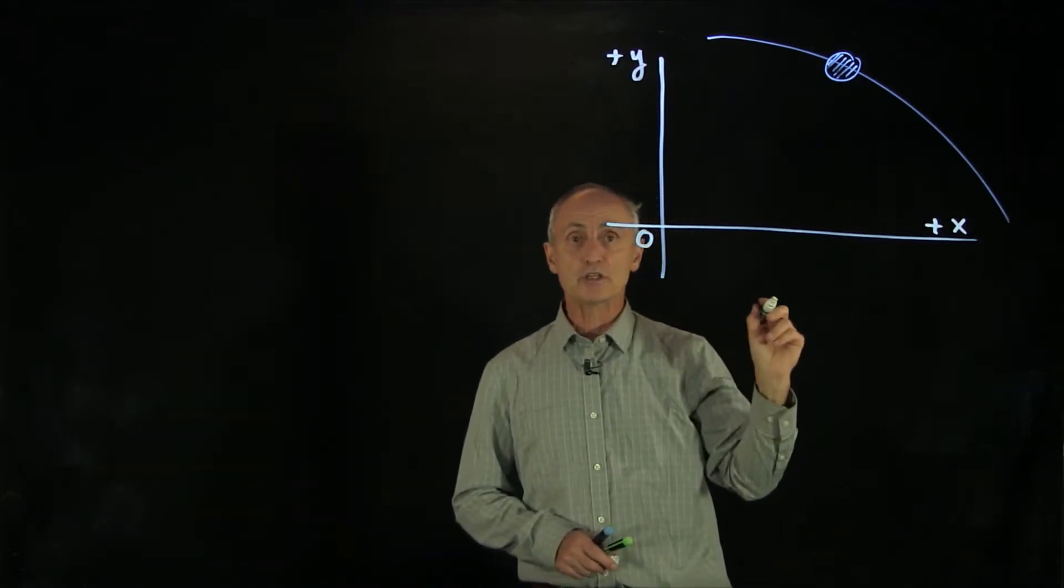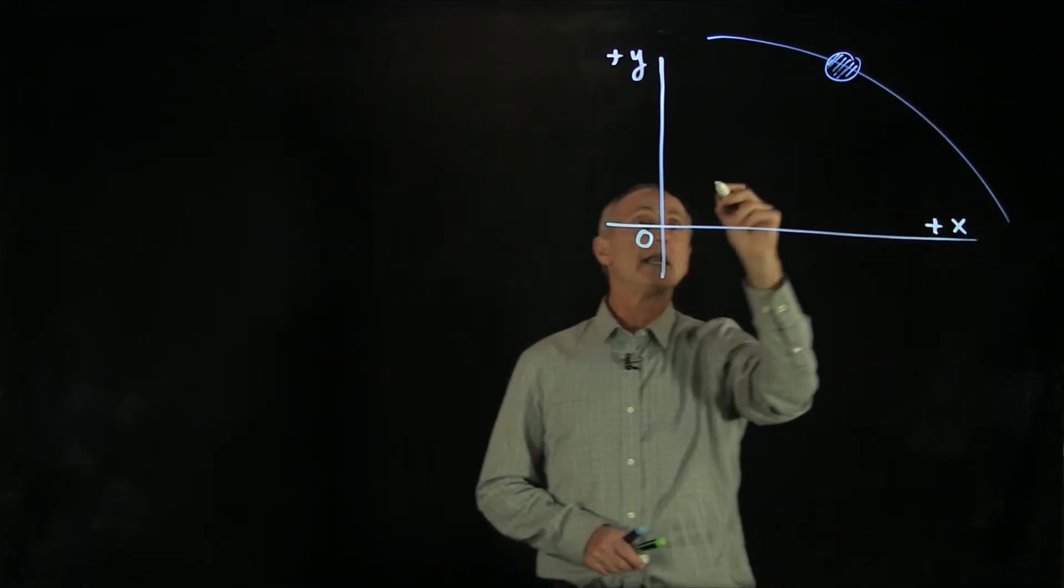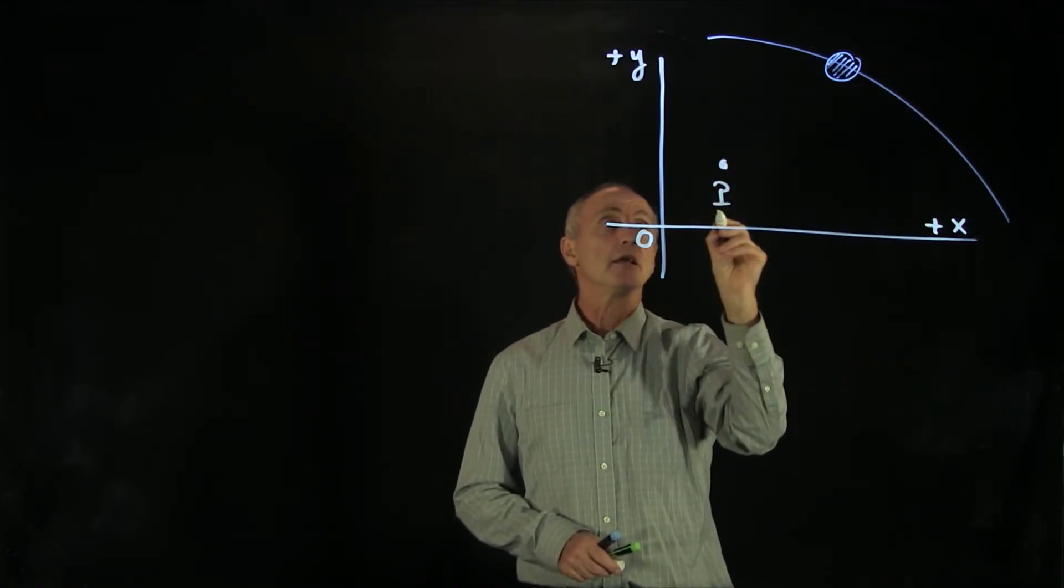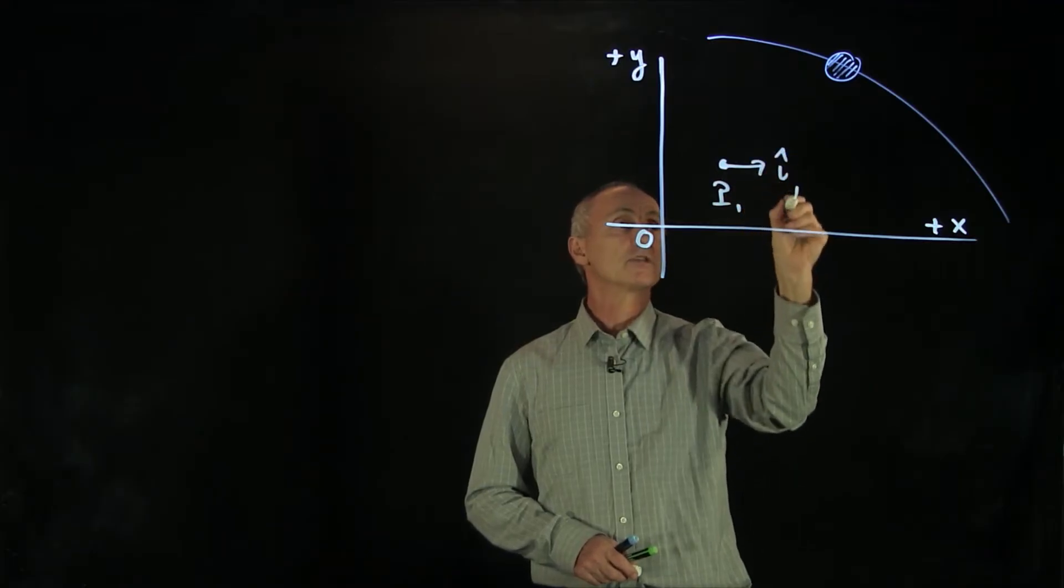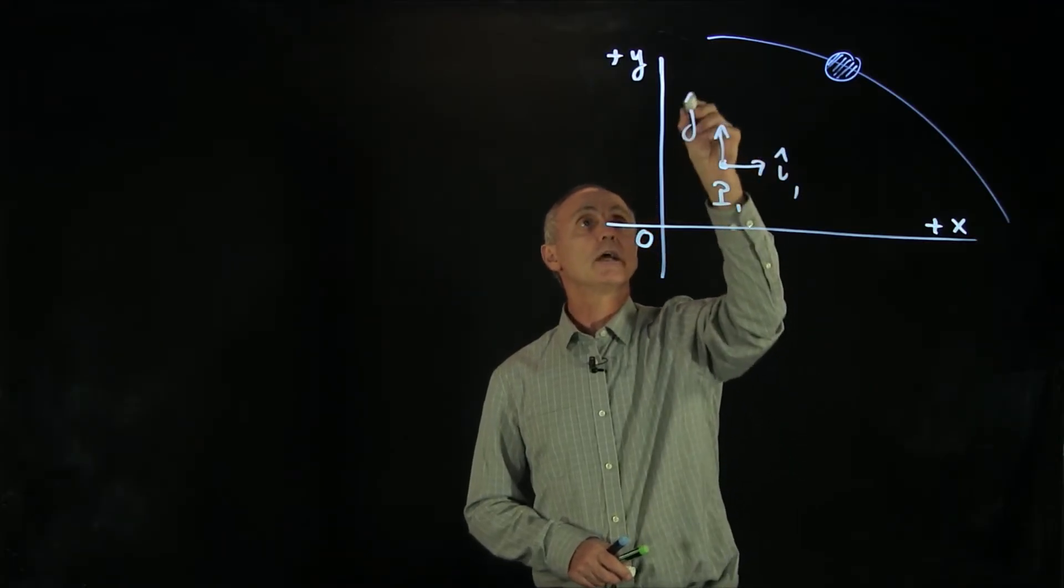And at every single point in space, so if we had any arbitrary point P here, let's call this P1, we have a choice of unit vectors i hat 1 and j hat 1.